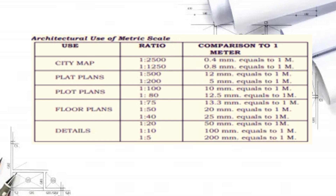In flat plans, the ratio we use is 1 to 500 or 1 to 200. When comparing to 1 meter: for 1 to 500, 2 mm equals 1 meter, and for 1 to 200, 5 mm equals 1 meter. For flat plans, the ratio can also be 1 to 100 and 1 to 80, where for 1 to 100, 10 mm is equivalent to 1 meter.